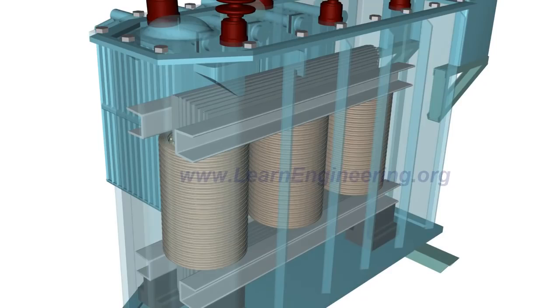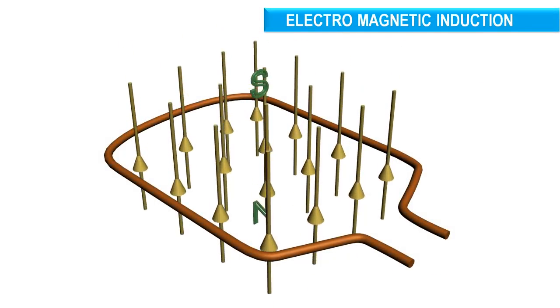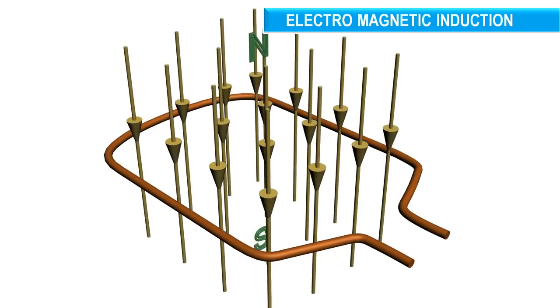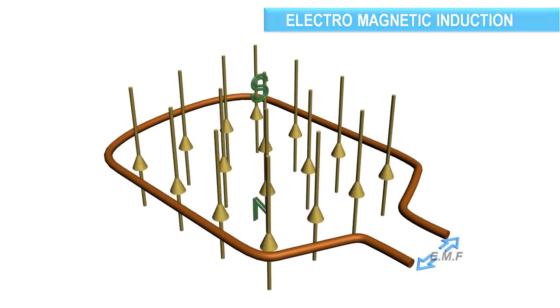The basic working principle of a transformer is simple: electromagnetic induction. According to this principle, a varying magnetic flux associated with a loop will induce an electromotive force across it.